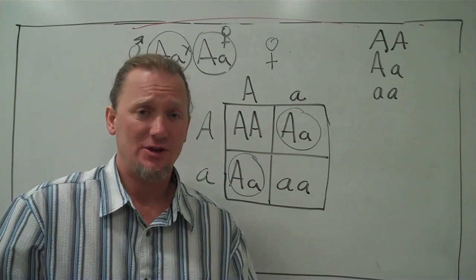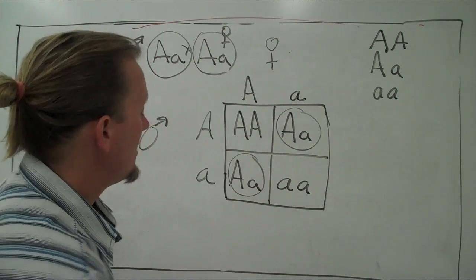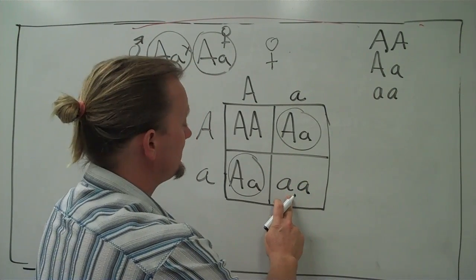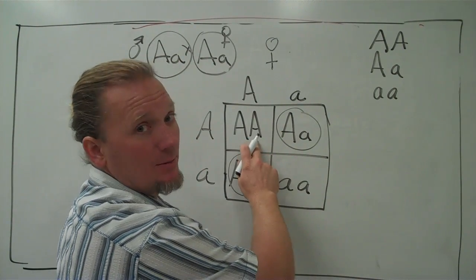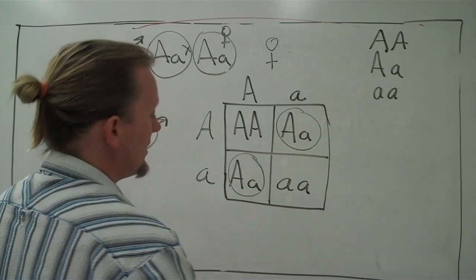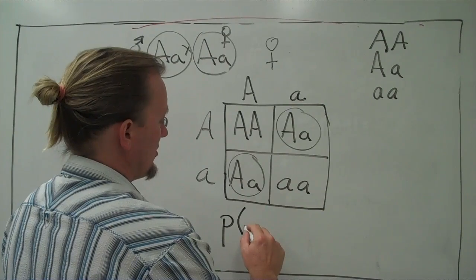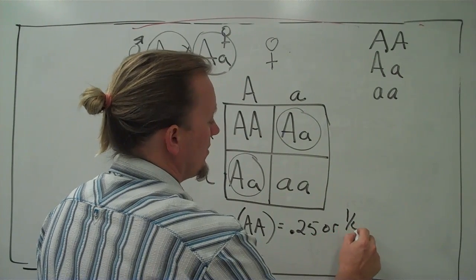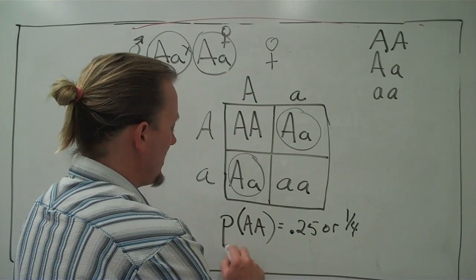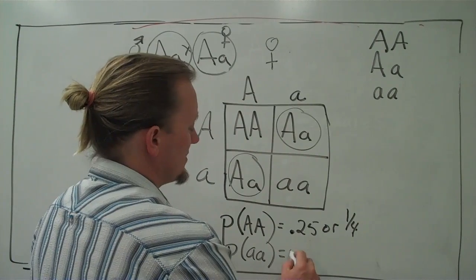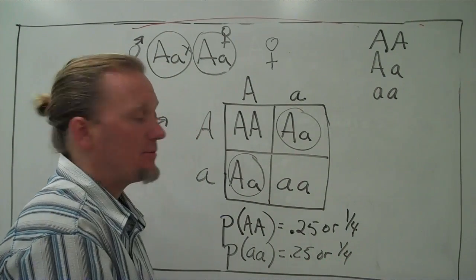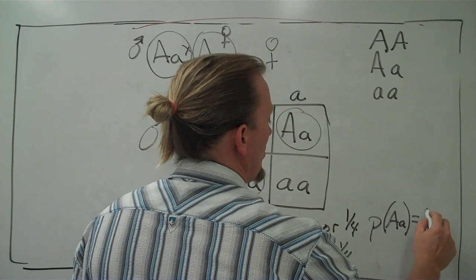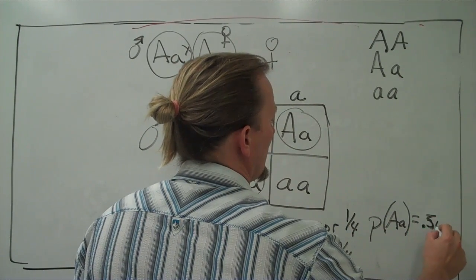This genotype — big A little a — happens twice here, so the most likely outcome for the child will be the heterozygous combination. There are other possibilities: little a little a occupies only one box, that's only a quarter of the time, and big A big A is the other quarter. So the probability of big A big A equals 0.25, the probability of little a little a equals 0.25, and the probability of the heterozygous state equals 0.5.